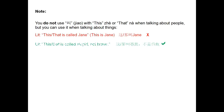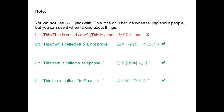But you can, however, say 'this or that action is called stupid, not brave': 这, or 那, 叫愚蠢, 不是勇敢. You can also say 'this item is called a telephone': 这个东西叫电话. Or, 'this tea is called 铁观音': 这个茶叫铁观音.